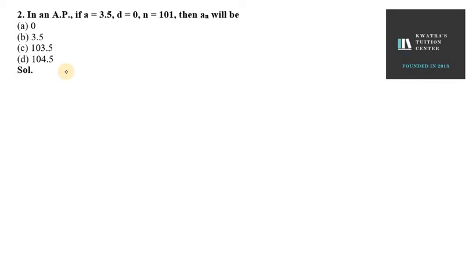Question number 2 of exercise 5.1 says: In an AP, if a = 3.5, the first term is given as 3.5. D is given, that is 0, the common difference between two consecutive terms will be 0. And n here is 101.